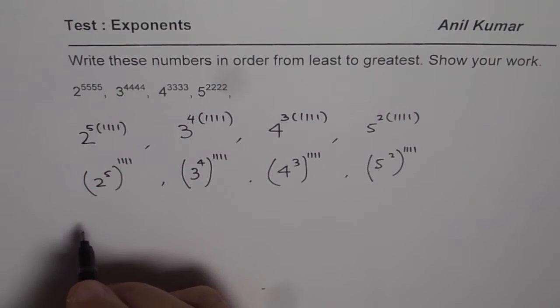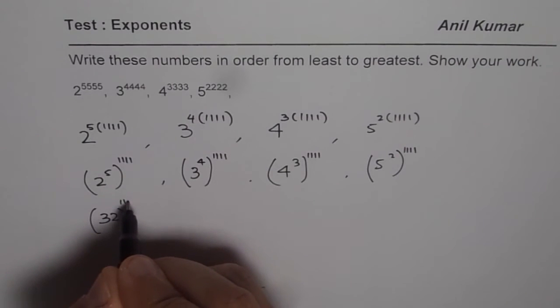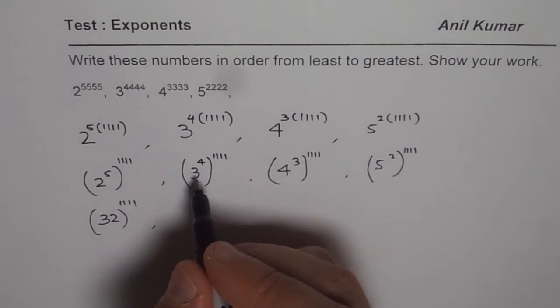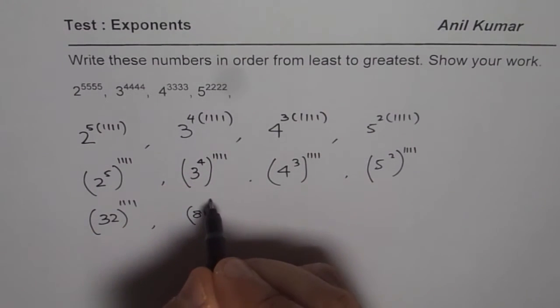What is 2 to the power of 5? It is 32. So we have 32 to the power of 1111. Now, 3 to the power of 4 is 81. So 81 to the power of 1111.